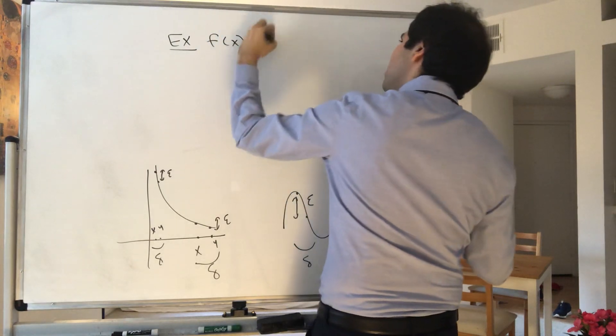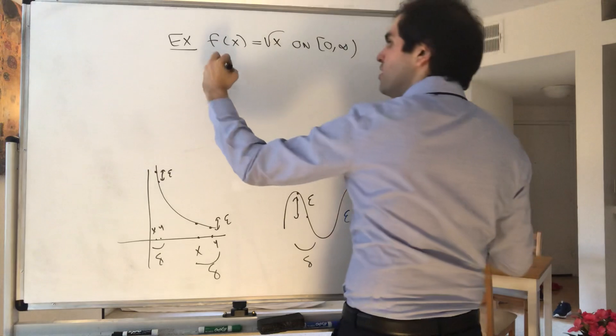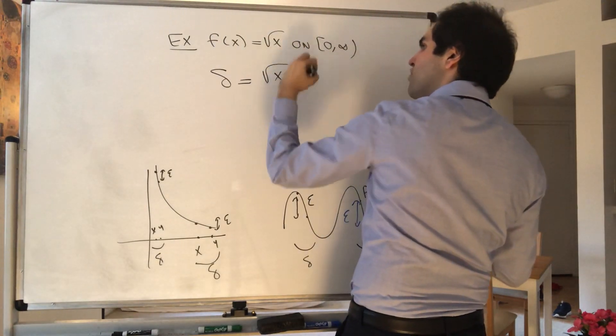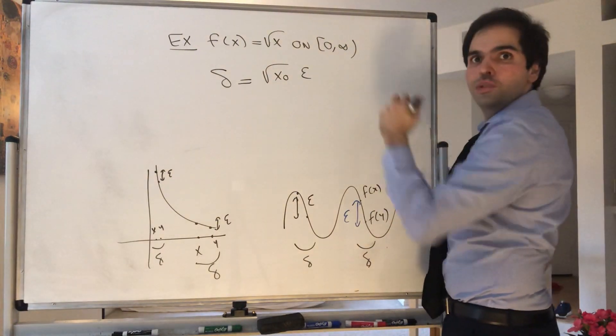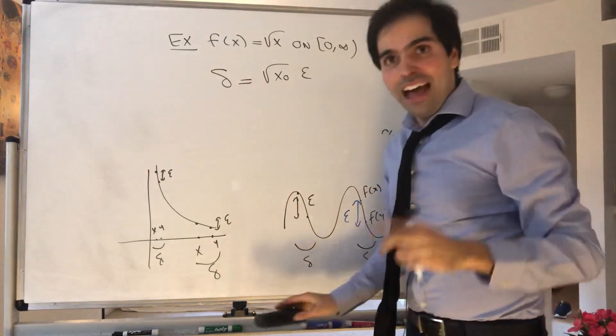And in fact, if you take f of x equals square root of x on the interval 0 comma infinity, you could maybe find delta to be square root of x naught times epsilon. But in fact, this is uniformly continuous, which is weird.